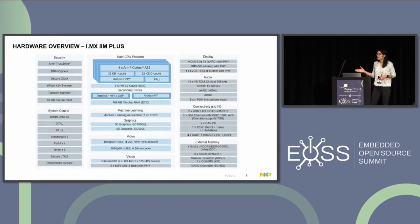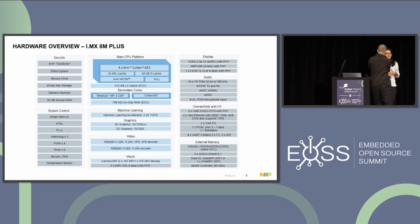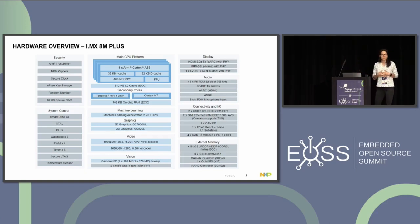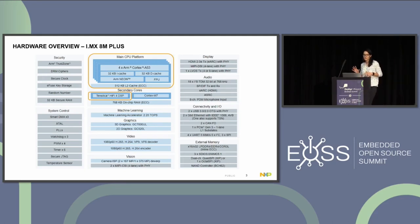This is the diagram for the i.MX A10+. As you can see, it's split into multiple subsystems — we have security, display, audio, video, machine learning, and others. Our focus for this presentation will be the main CPU platform. We have four Cortex-A53 cores and two secondary cores: a Tensilica HiFi 4 DSP and a Cortex-M7.